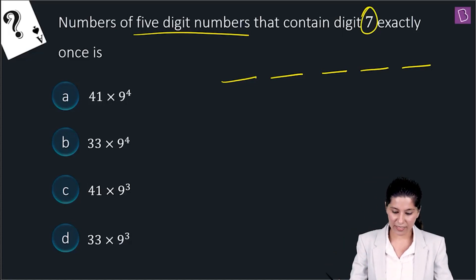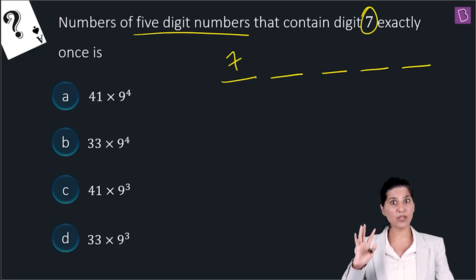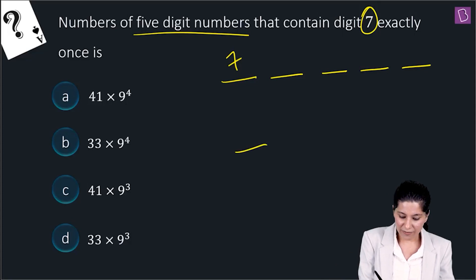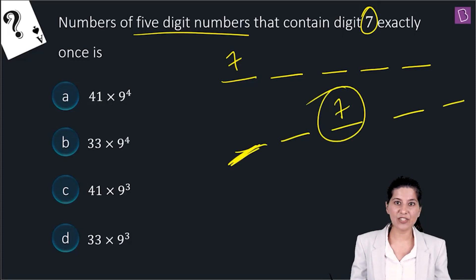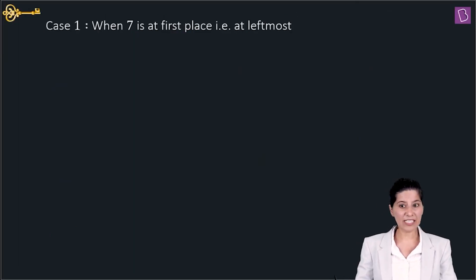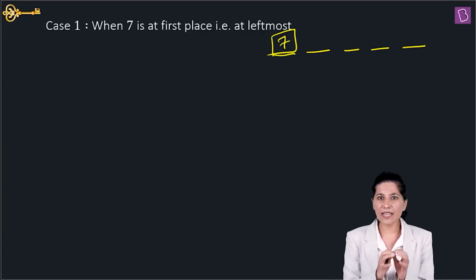Now, if 7 comes at the first place, then the digit 0 can appear anywhere else — it doesn't matter. But if 7 is not at the first place, then 0 cannot come at the first place either. So I need to take 2 cases. Case 1: 7 is at the first (leftmost) place. I have 5 places total and I've fixed 7 at the first place.